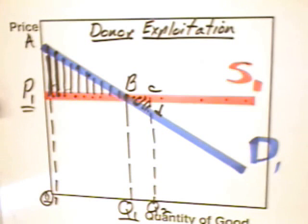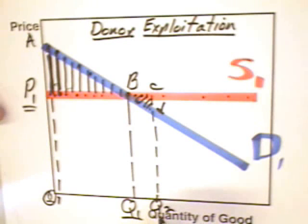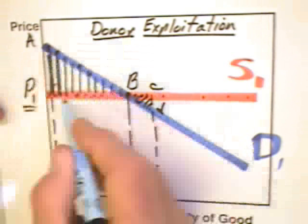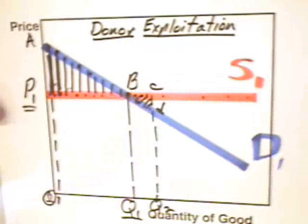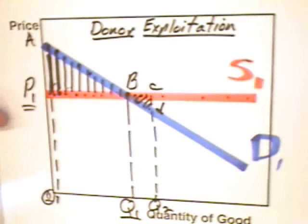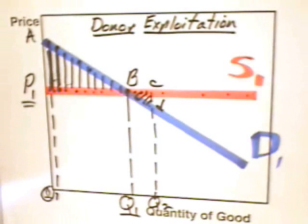So the donor is caught in a bind. If the donor chooses to give nothing at all, the donor loses that entire triangle. If the donor chooses to give Q2, the donor gains triangle P1AB but loses triangle BCD. On balance, the donor hasn't maximized welfare, but has done better than giving nothing at all. So if an all-or-nothing deal is imposed, the donor can be expected to give to Q2 — but only so long as the donor does not have alternative recipients to whom he or she can turn.